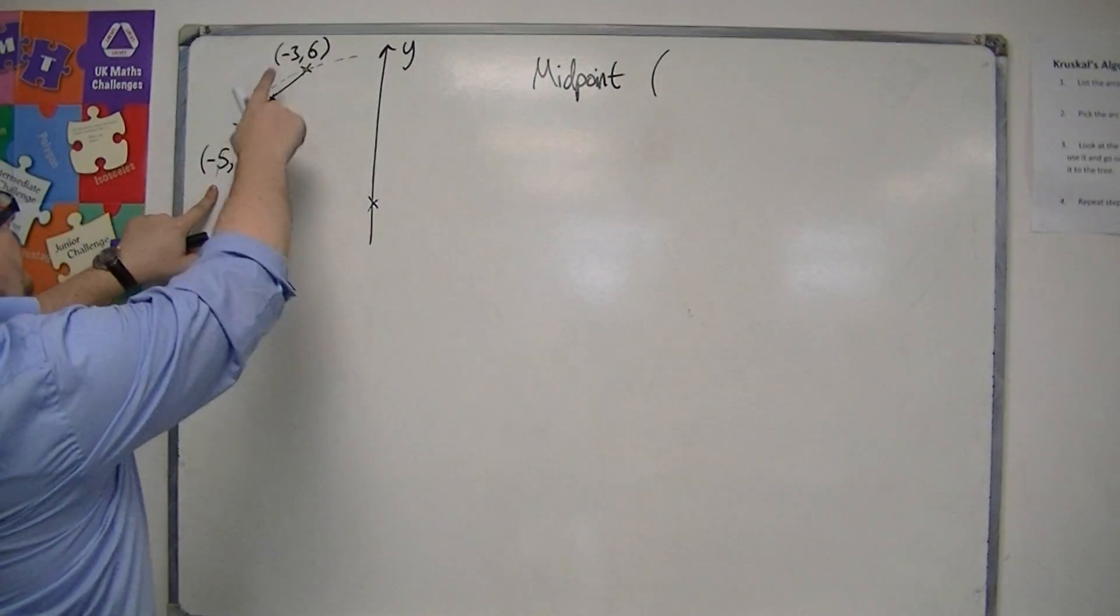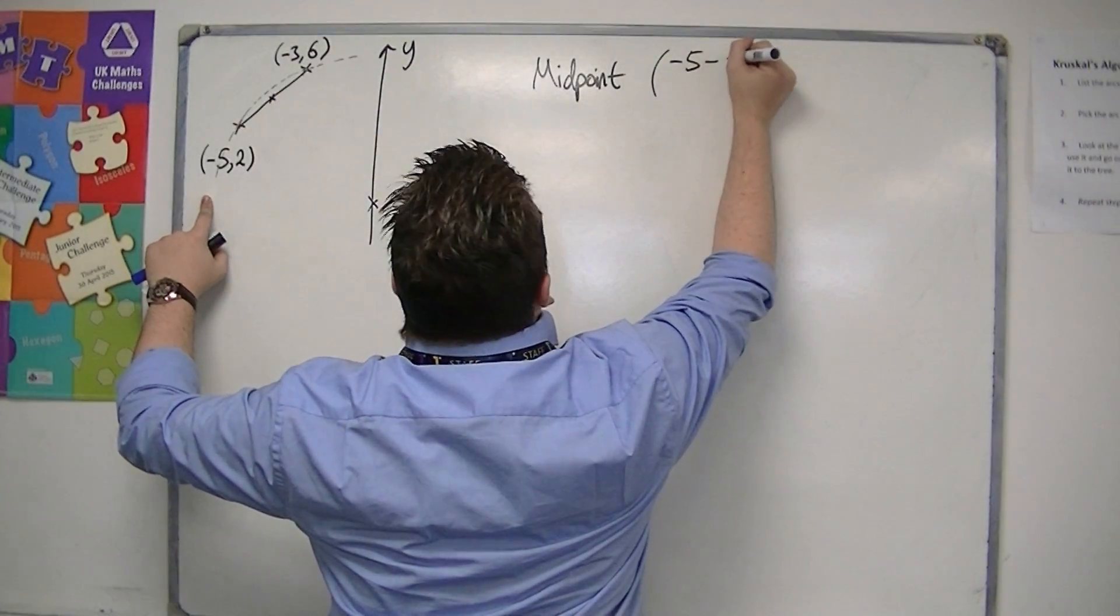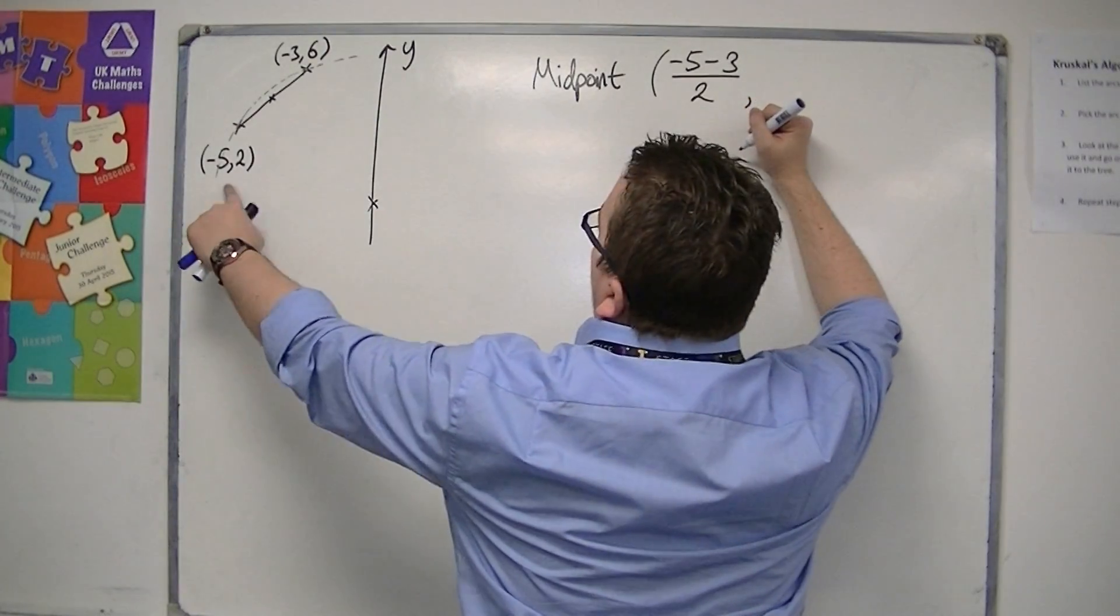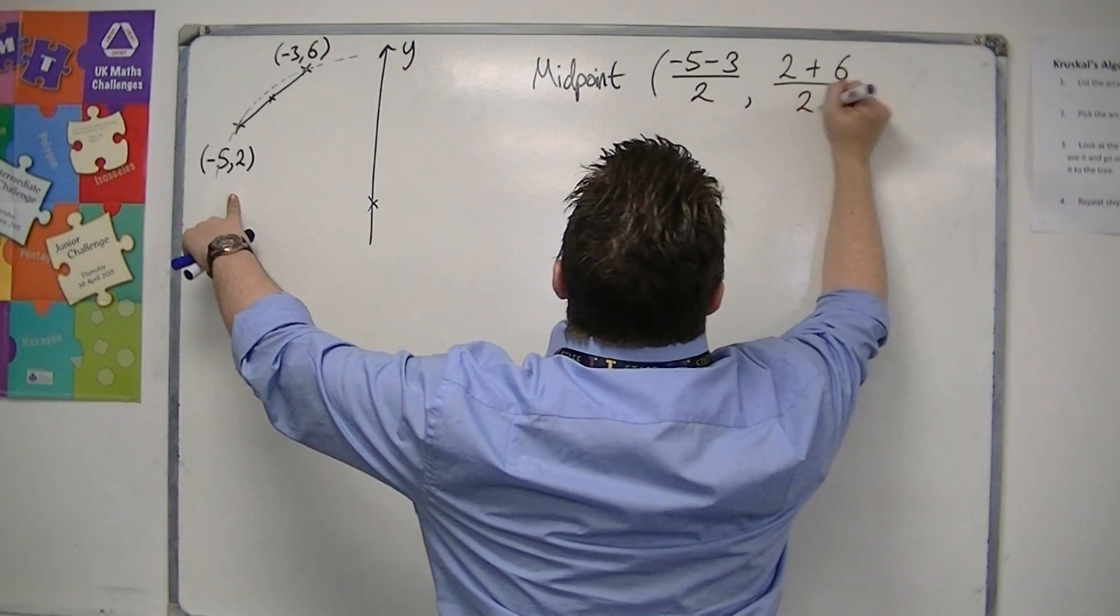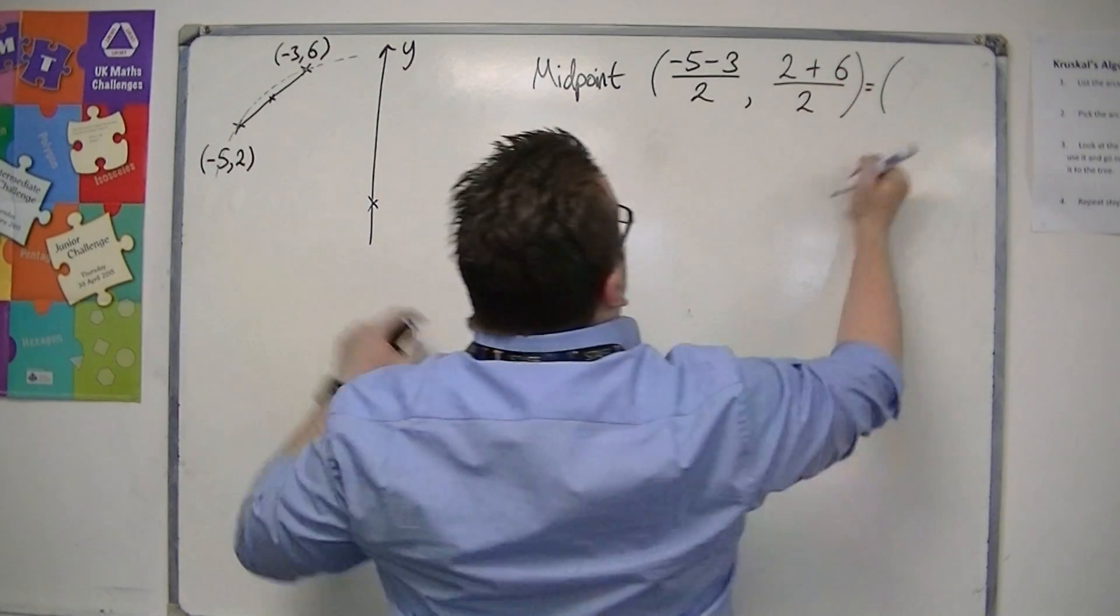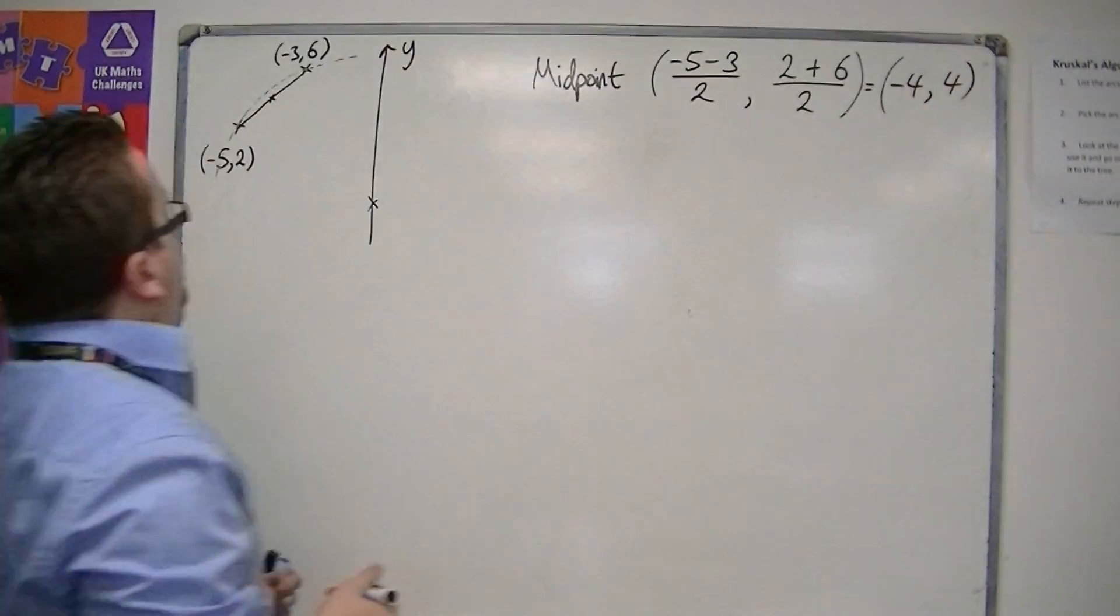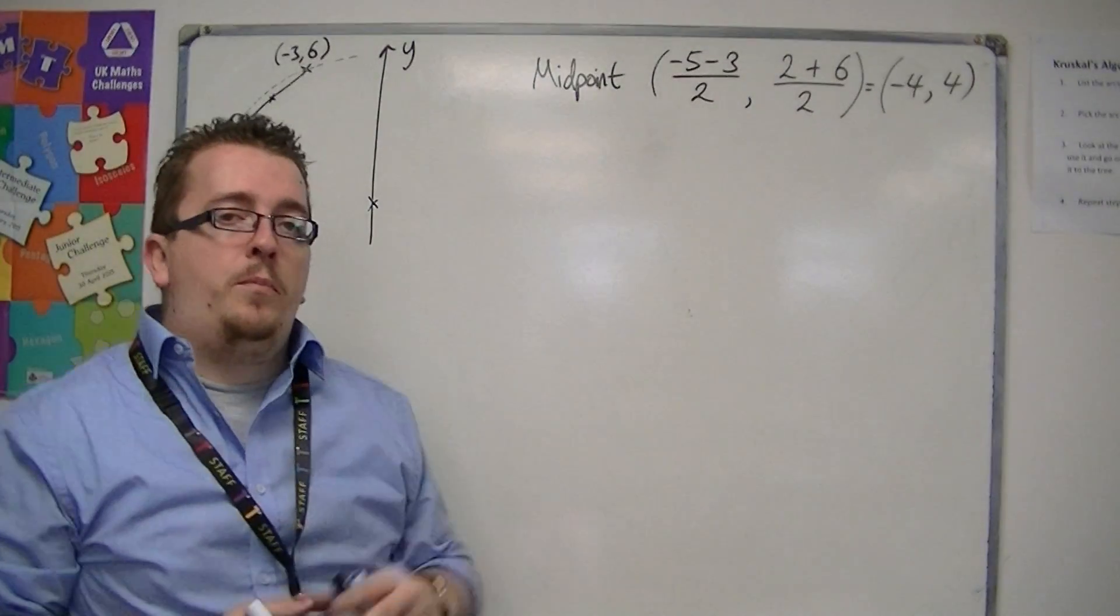Now, we've got minus 5, 2, and minus 3, 6. So minus 5, take away 3, over 2. And we've got 2, plus 6, over 2. So the midpoint is minus 4, 4. OK? So that's the midpoint that we have here.